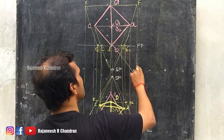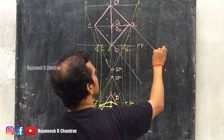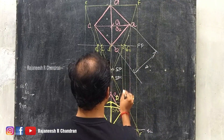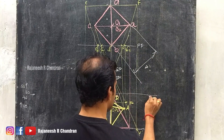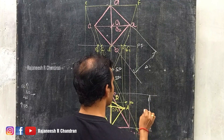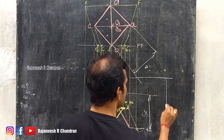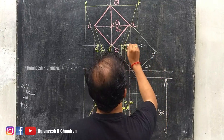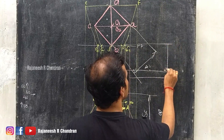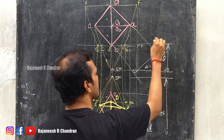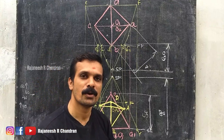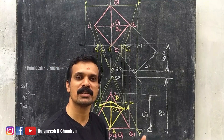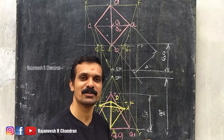Now we can complete the dimensions: the side is 40, the height is 50, the station point is 80 above, and 60 in front. I hope all of you have understood this question. Thank you.